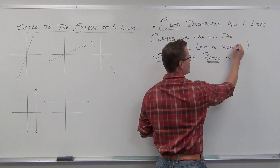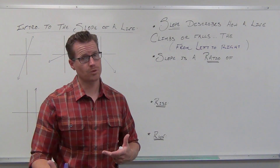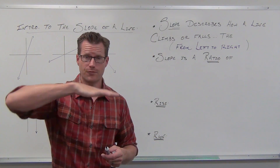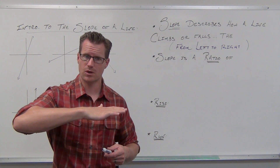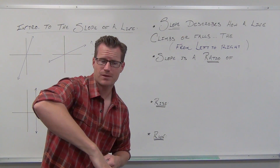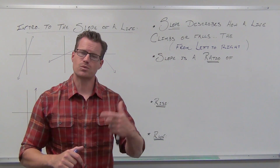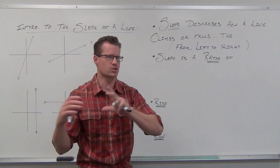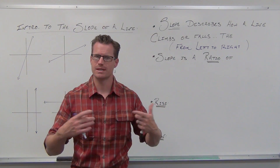One other thing that we call the slope — and this happens especially at the calculus level or in word problems — if the slope tells us how we climb or fall, that's called the rate of change: the rate at which our line is changing. Is it changing a lot as we move from left to right? Is it barely increasing or barely decreasing? So the slope is also called the rate of change. If you hear slope or rate of change, they mean the same thing.